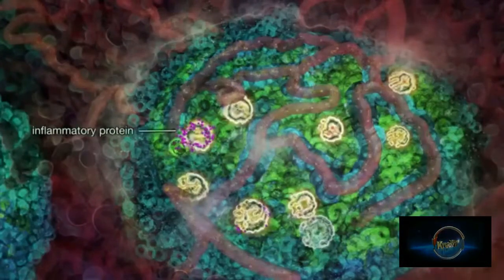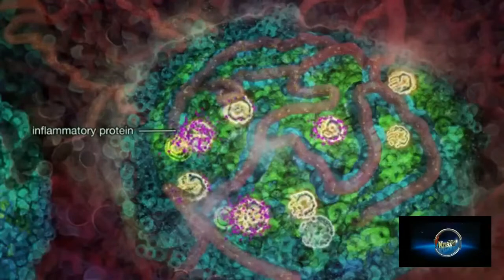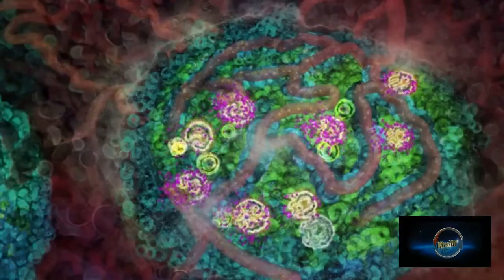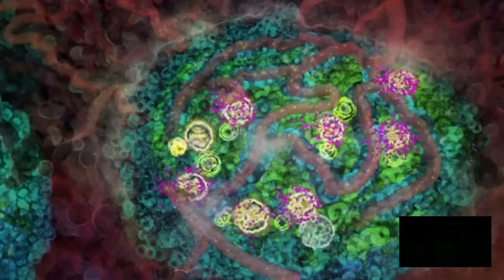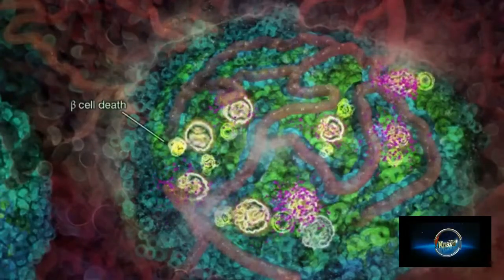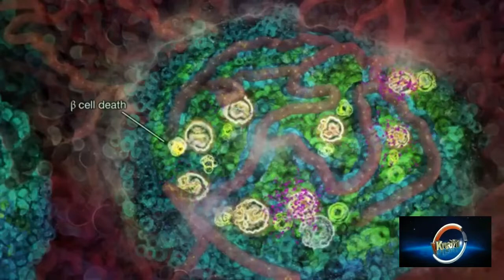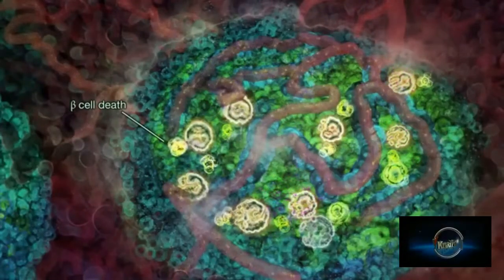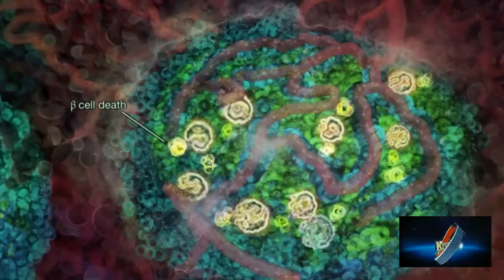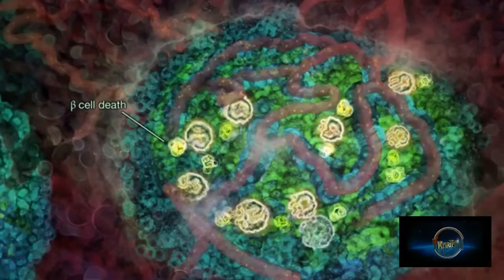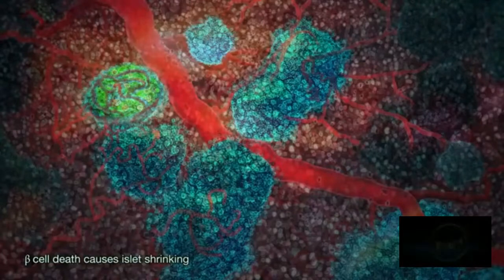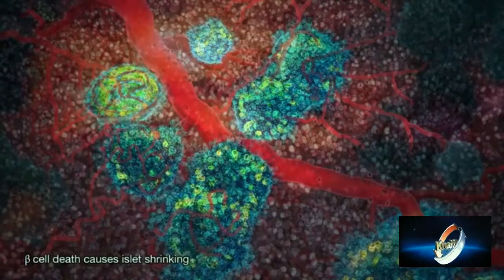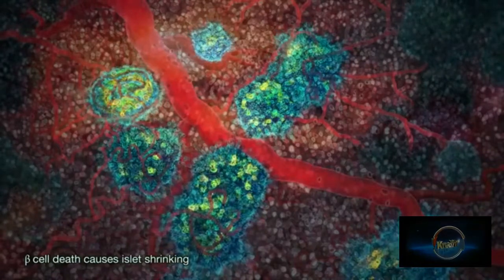The inflammatory protein is then secreted from the white blood cells into the islet. Unfortunately, this inflammatory protein causes death of the beta cells. Over time, beta cell death causes the islets to shrink, accelerating disease progression.